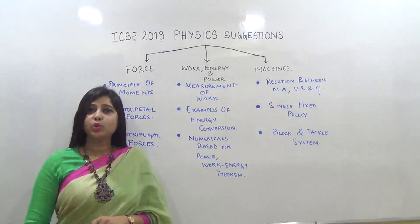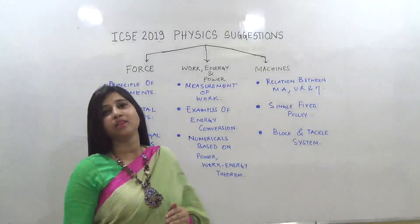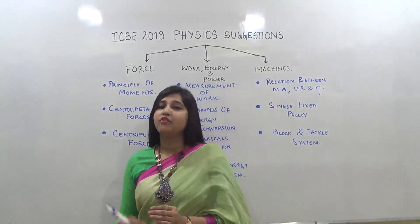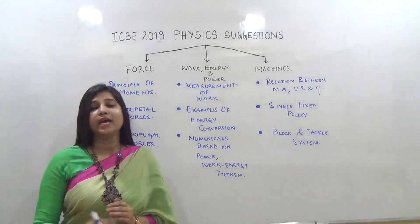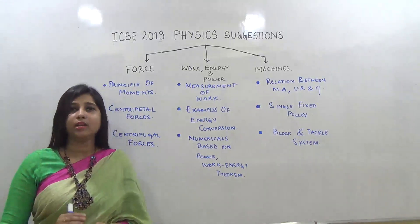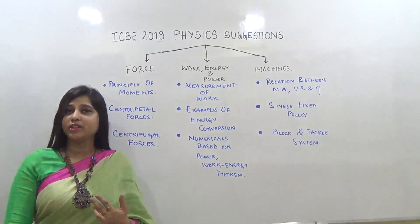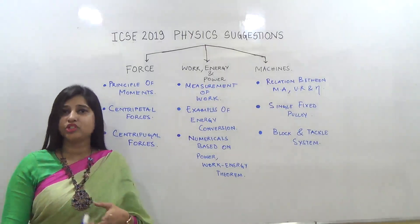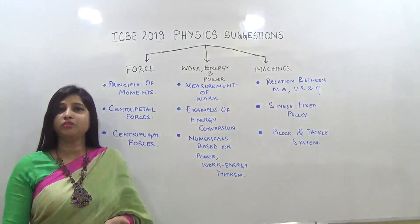Your physics paper is divided into two sections. In section 1 you have four questions, each divided into five parts with two marks each. In section 2 you have six questions out of which you have to attempt any four — application based questions, pictorial questions, conceptual questions, and numericals which usually consist of three to four marks.